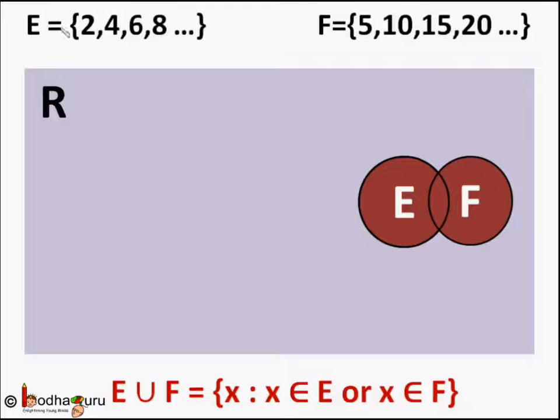So we take an example, say E is a set of even numbers like 2, 4, 6, 8 and so on. And F is a set of multiples of 5 like 5, 10, 15, 20 and so on.